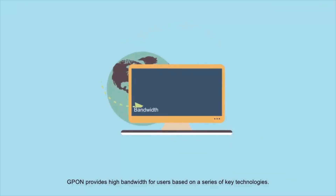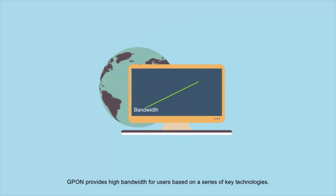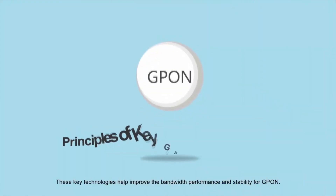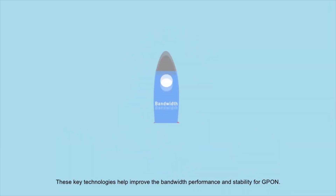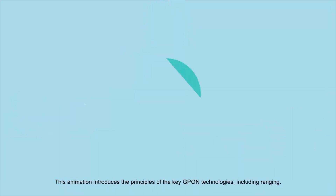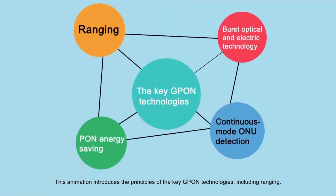G-PON provides high bandwidth for users based on a series of key technologies. These key technologies help improve the bandwidth performance and stability for G-PON. This animation introduces the principles of the key G-PON technologies, including ranging, burst optical and electric technology, continuous mode ONU detection, and PON energy saving.